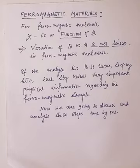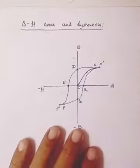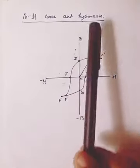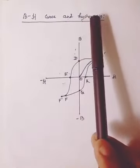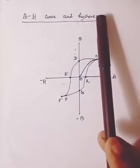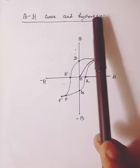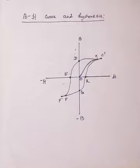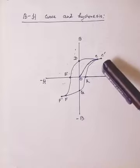But before we are doing this, let's have a look of the B-H curve for ferromagnetic samples. Now here you can see that there is a word hysteresis. So this particular word will be explained later. Now let's start analyzing this particular curve step by step.